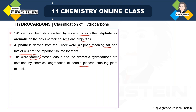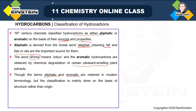Though these terms aliphatic and aromatic are based on the source, they are still retained in modern terminology. However, classification nowadays is mainly done on the basis of structure, not on the basis of origin. Aliphatic compounds have certain structural features and aromatic hydrocarbons have another type of structural feature — not only is the source different, but their structural features are also different.